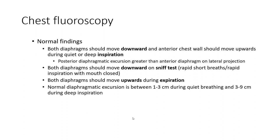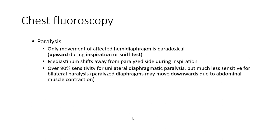Normal findings on chest fluoroscopy: both diaphragms should move downward and the anterior chest wall should move upward during quiet or deep inspiration. Both diaphragms should move downward on the sniff test, and both diaphragms should move upward during expiration. Normal diaphragmatic excursion is between 1–3 cm during quiet breathing and 3–9 cm during deep inspiration.